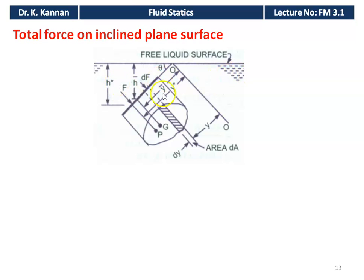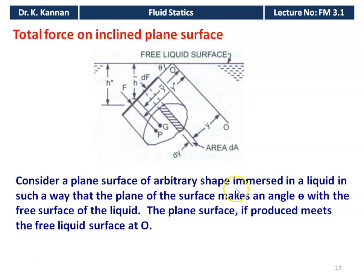Next, we discuss the total force on an inclined plane surface. When the plane surface is inclined at an angle theta to the free surface of the liquid, h-bar is the distance of the center of gravity from the free surface and h* is the distance of the center of pressure. The force acts normal to the surface. We take an elemental strip of thickness dy at distance y from the intersection point O, where OO is the axis perpendicular to the plane surface.